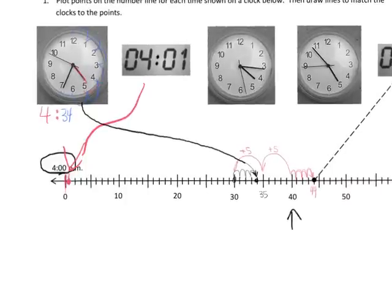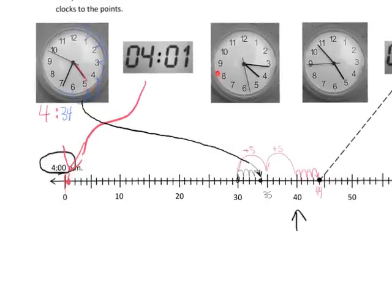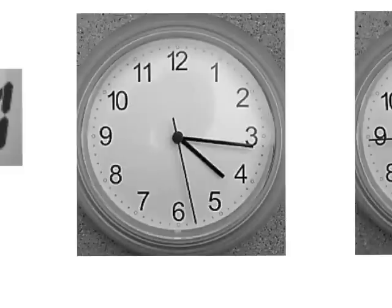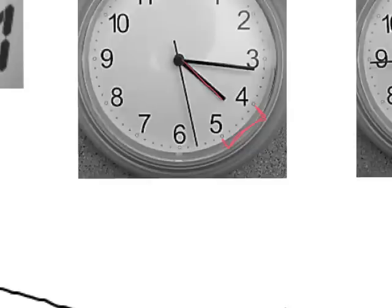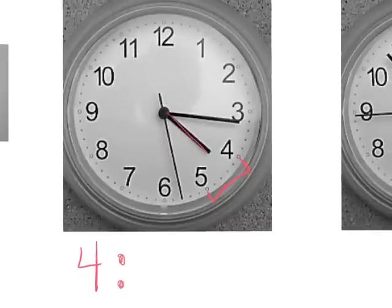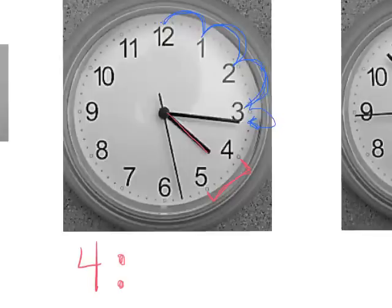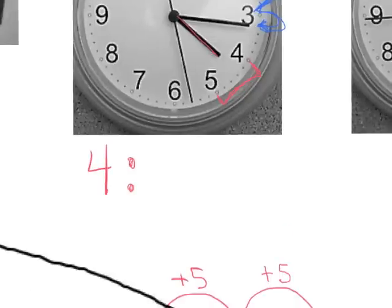Let's do this analog clock right here and zoom in. We can see that it's somewhere between 4 and 5 — we know because the hour hand is between the 4 and the 5. So the time is 4 o'clock plus some minutes. Let's figure out how many minutes. We start at the 12 and count over: 5, 10, 15 — and it looks like we can only go one more minute over. So that's 5, 10, 15, 16. So we have 4 o'clock plus 16 extra minutes.